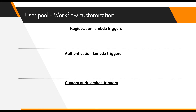We talked about workflow customization and the triggers that can be invoked before and after certain states. Let's look at the available triggers — for each of these you can attach a Lambda function. We can group these triggers into three primary workflows: the registration flow, the normal authentication flow where ID and password are used, and the custom authentication flow where authentication is done programmatically — for example, using a custom code sent to the user's mobile phone — sometimes called passwordless authentication.